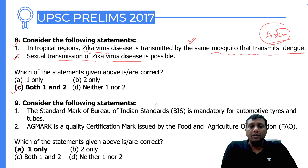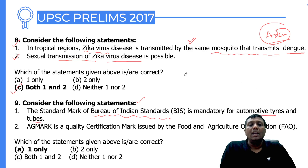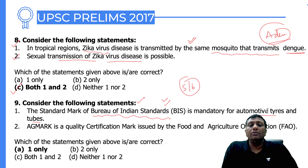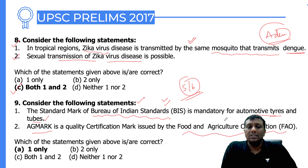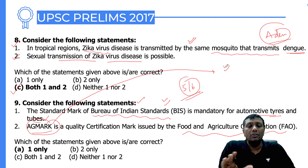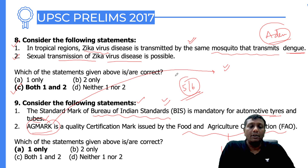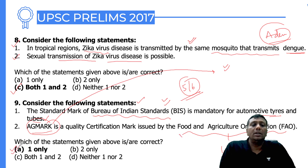The next question is from the miscellaneous chapter on Bureau of Indian Standards. The BIS standard is mandatory for automotive tires and tubes — in 2016, five to six products including tires and tubes were added under BIS. Regarding Eggmark, it is a quality certification mark issued by the Indian government's agricultural marketing body to certify food and cereal crops in India — not by the international Food and Agriculture Organization. Therefore only the first statement is correct.